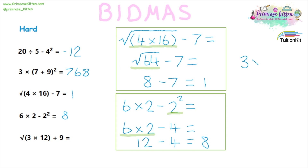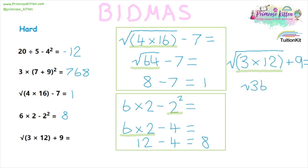Last one here, and these ones have been quite tricky — properly testing if you can work out your BIDMAS. So this is the square root of three times 12, plus nine. Three times 12 is in a bracket, so that is the thing we have to do first, giving us the square root of 36 plus nine. The square root of 36 is six, plus nine, giving us 15.